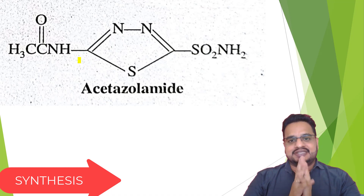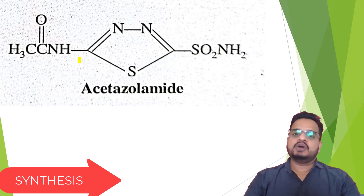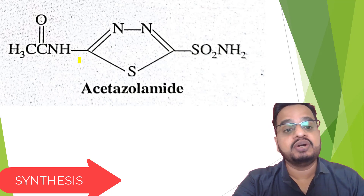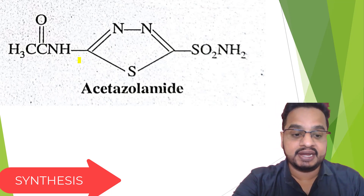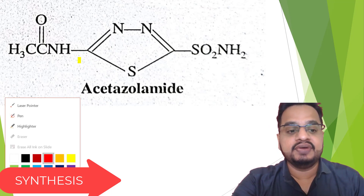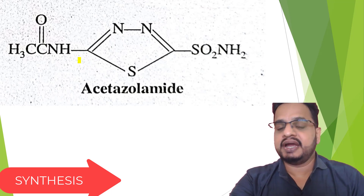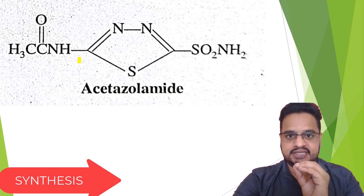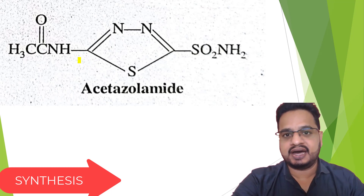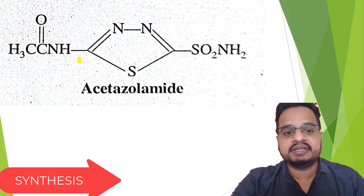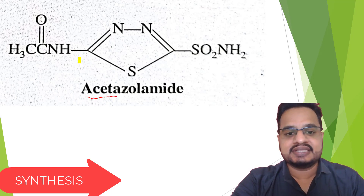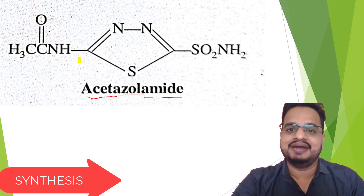In this part, we are going to discuss the synthesis of the compound, that is acetazolamide. Whenever we discuss the synthesis of acetazolamide, we have to see the basic parts: what they actually are. The first part is 'acet', the second is 'azole', and the third part is 'amide'.